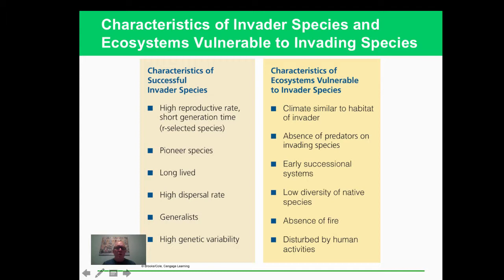You can think about the characteristics that are going to be good for invader species and what makes an ecosystem vulnerable. If the ecosystem is similar to the invader's habitat and the invader has no predators, that's a good setup for invasive species to do well. The kinds of species that do well are generalists with high genetic variability, so there will be differential reproduction based on what trait is successful in the new environment.